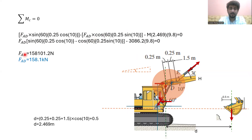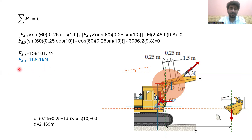When we solve this equation, we get force in cylinder AD which is equal to 158,101.2 Newtons. We can also write this in kilo Newton form, which is 158.1 kilo Newtons.